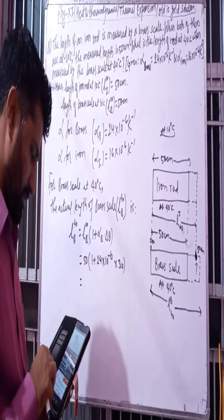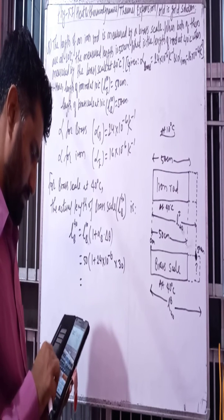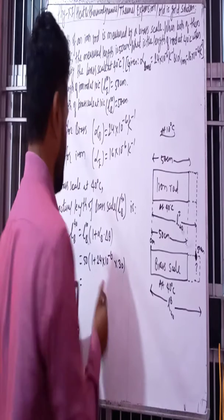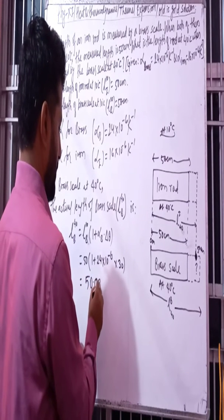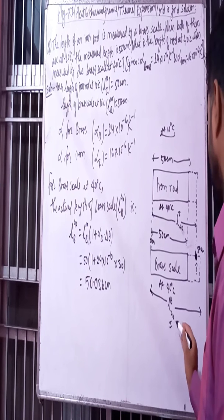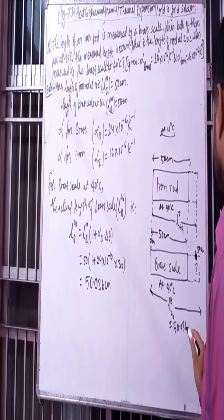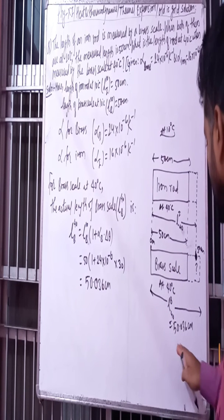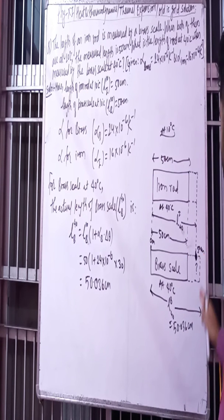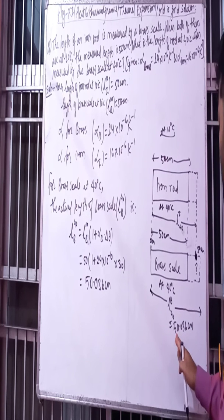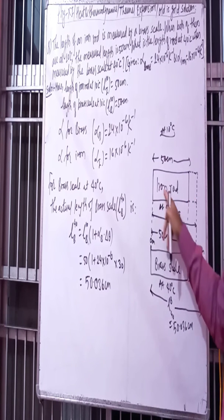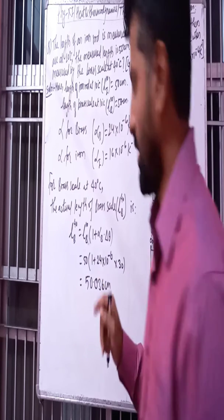50 times 1 plus alpha delta theta, times 30, equals 50.036 centimeter. So the brass scale length at 40 degrees centigrade is 50.036 centimeter. Now the iron rod has also expanded.